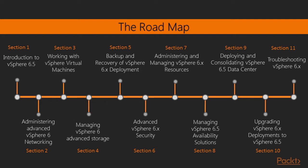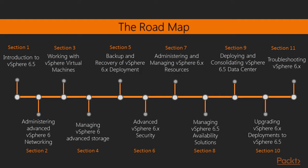We cover the high availability features now available with the vCenter Server Appliance version 6.5, deploying and consolidating a vSphere 6.5 data center, and how to upgrade your deployment to a vSphere 6.5 environment. The course ends with Section 11, which is troubleshooting vSphere 6.x, covering advanced networking and other aspects not conventionally covered in courses, which I have found extremely useful in actual data center deployments.